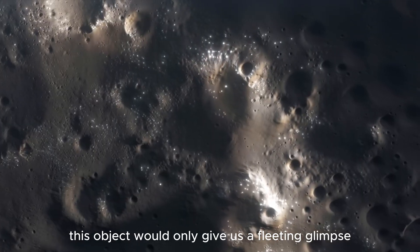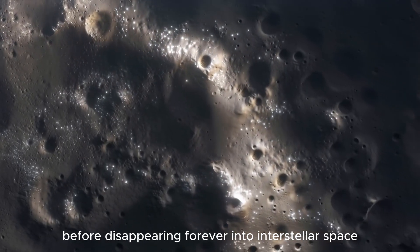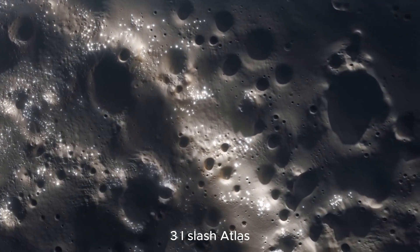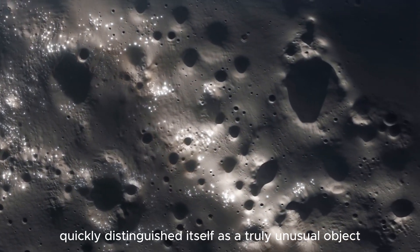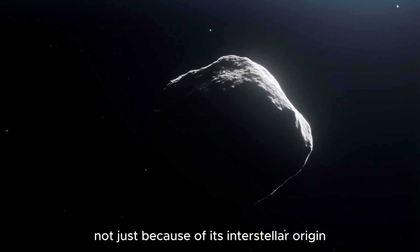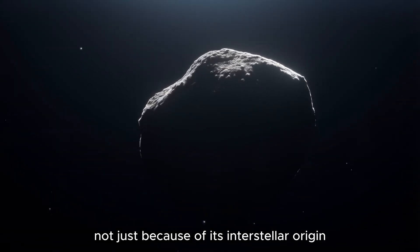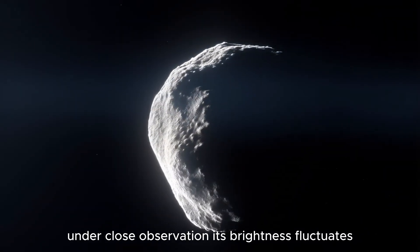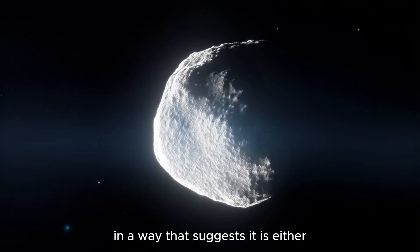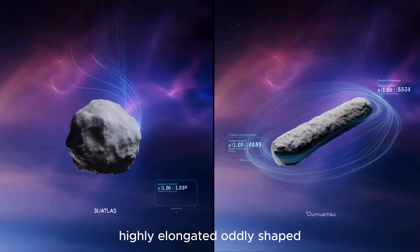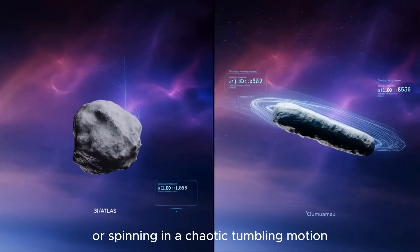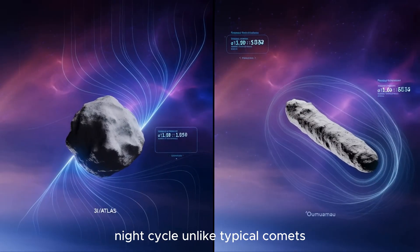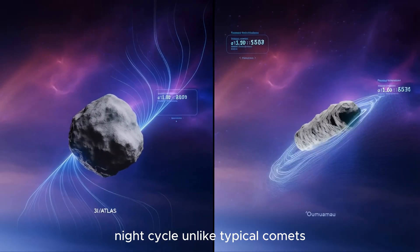3i/ATLAS quickly distinguished itself as a truly unusual object, not just because of its interstellar origin, but because of the way it behaves under close observation. Its brightness fluctuates in a way that suggests it is either highly elongated, oddly shaped, or spinning in a chaotic tumbling motion.